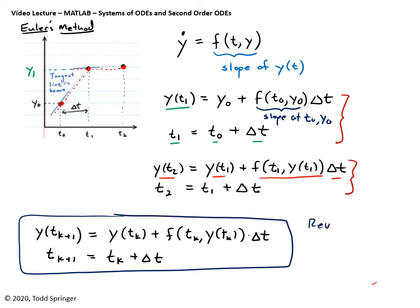Now we need to think about how to adapt Euler's method to a system of ODEs — not just one ODE but two coupled ODEs. It turns out to be quite easy to adapt, and we'll do that now.